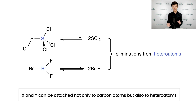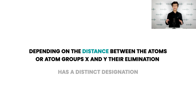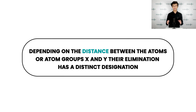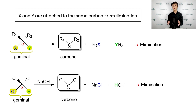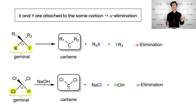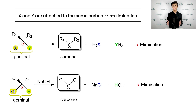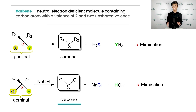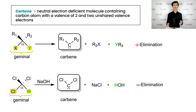And here we come to something special about elimination reactions. Depending on the distance between the atoms or atom groups X and Y, their elimination has a distinct designation. If X and Y are attached to the same carbon atom, the elimination is then classified as alpha elimination. There is a useful designation for two substituents attached to the same atom — they are named geminal. For instance, let us take a look at the dehydrohalogenation of trichloromethane mediated by sodium hydroxide.